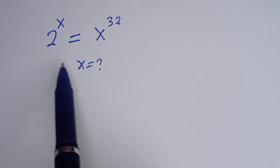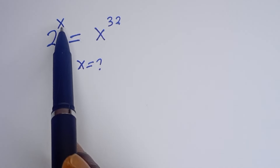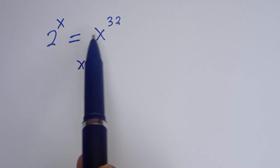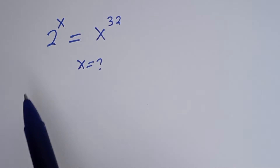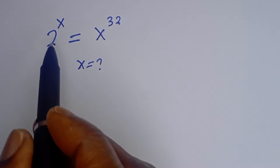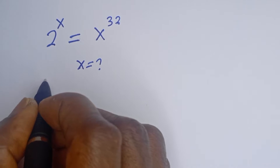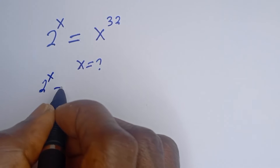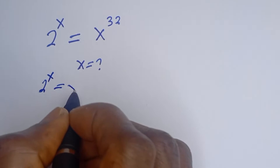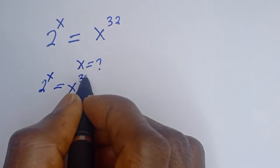Hello. How to solve for S in this equation: 2 to the power of S is equal to S to the power of 32.